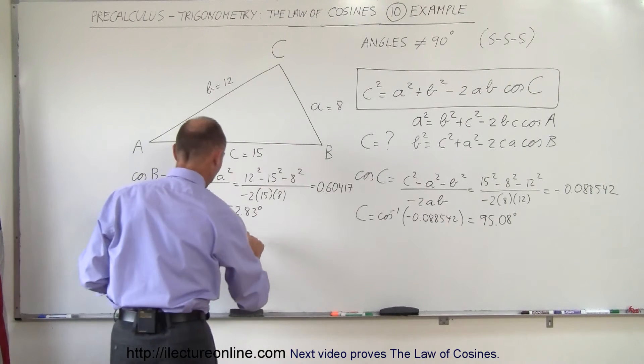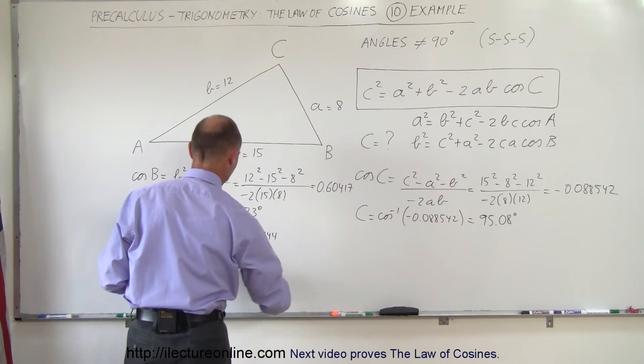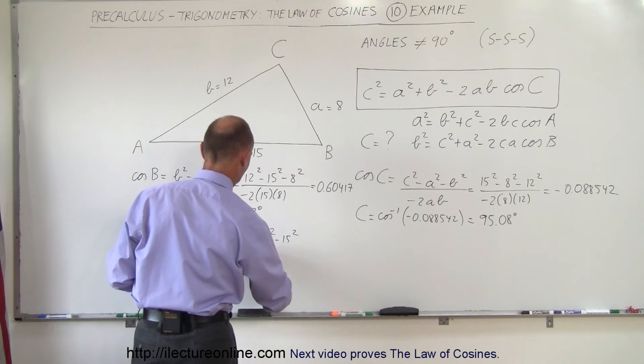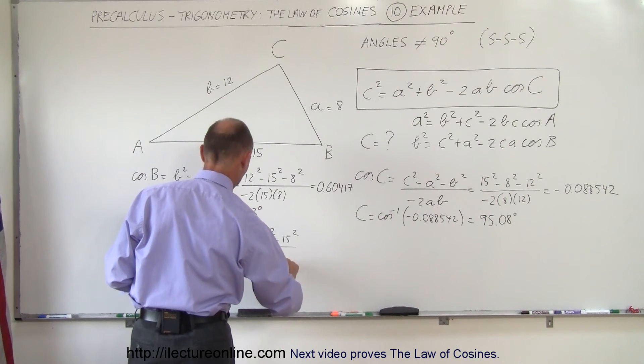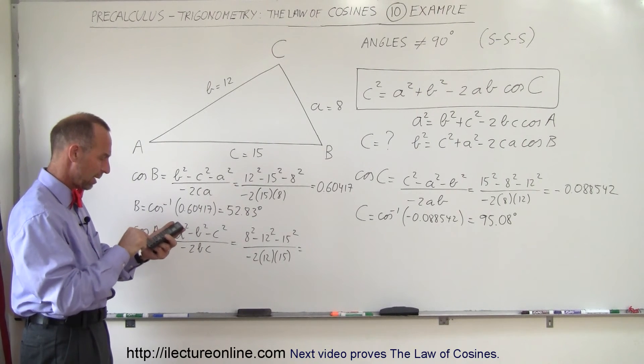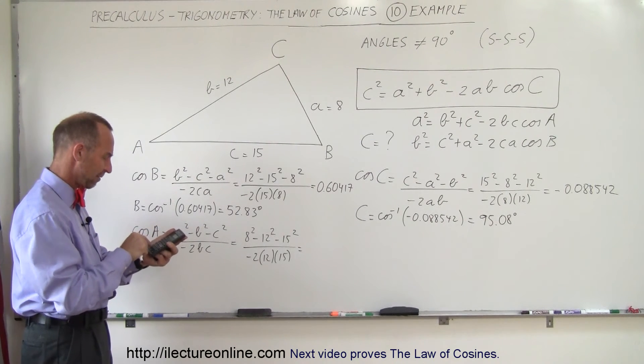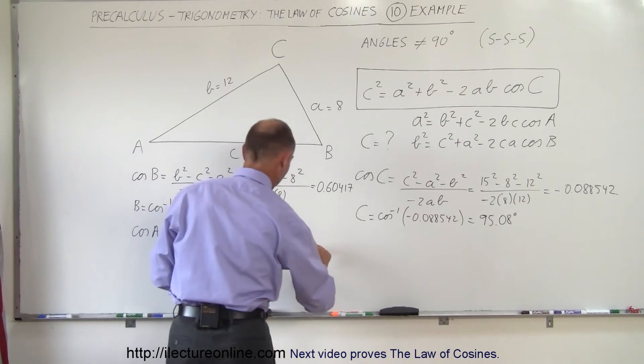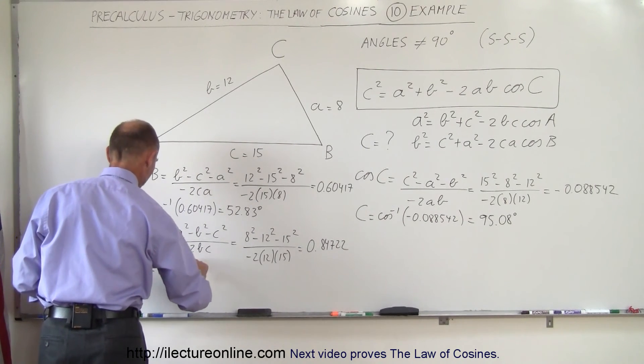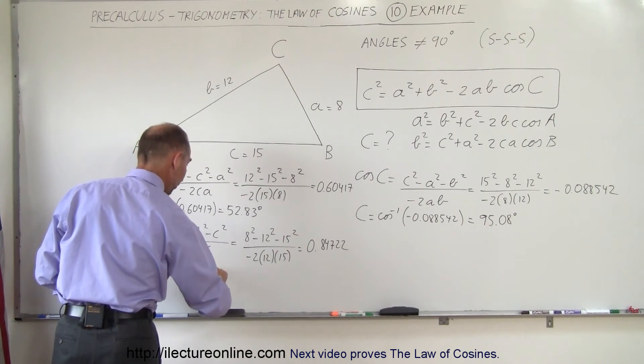When we plug in the numbers, we get A squared, that would be 64 minus 144. Well, let's see, let me just plug in what they are. So we have 8 squared minus 12 squared minus 15 squared divided by negative 2 times 12 times 15. So we get 64 minus 144 minus 225 divided by negative 2 divided by 12 divided by 15. We get 0.84722.